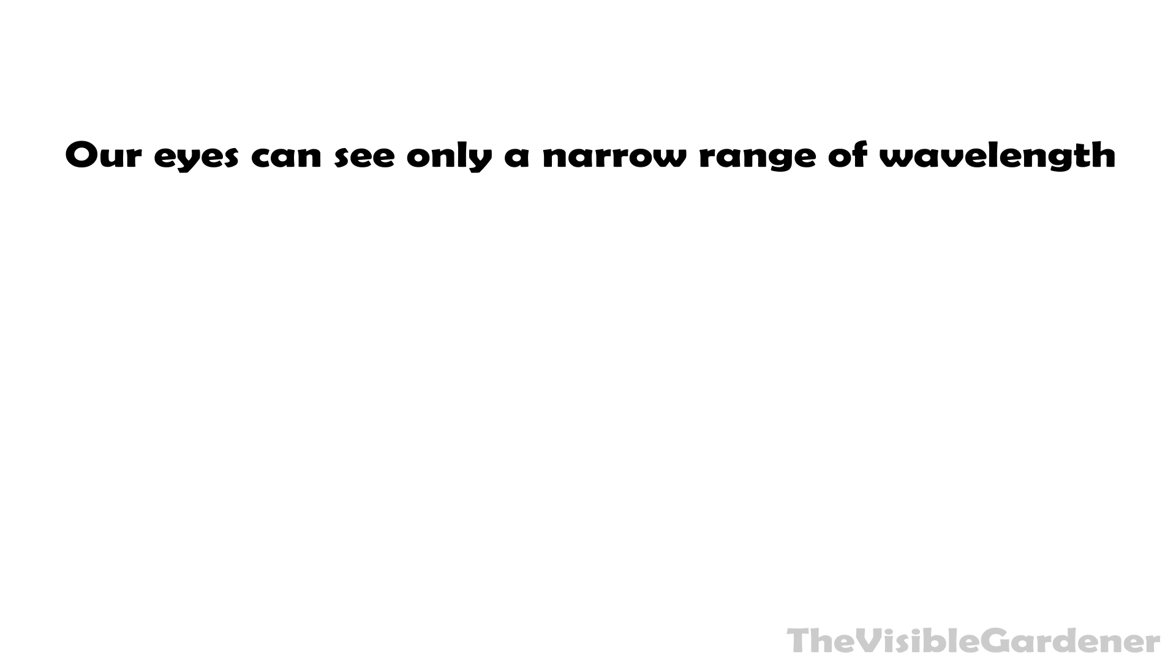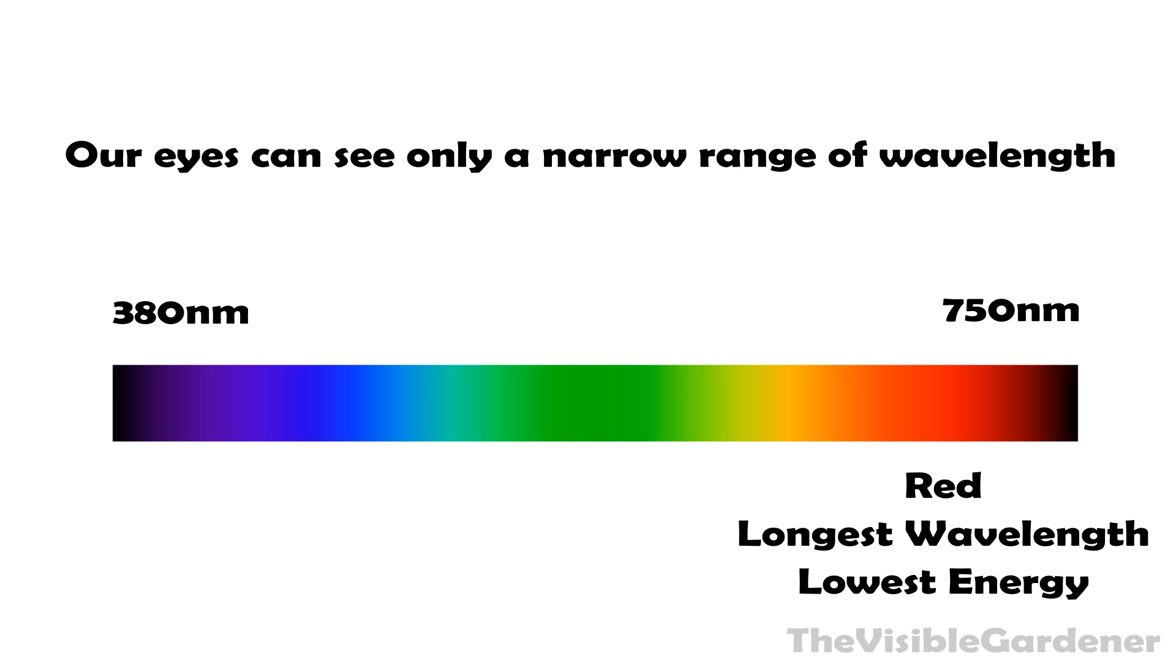Our eyes, though being able to see only a narrow range, do have an awesome way to distinguish the different wavelengths which they can see. They do this through color. With red having the longest wavelength (the least energy) and blue having the shortest wavelength (the highest energy), and everything else in between.